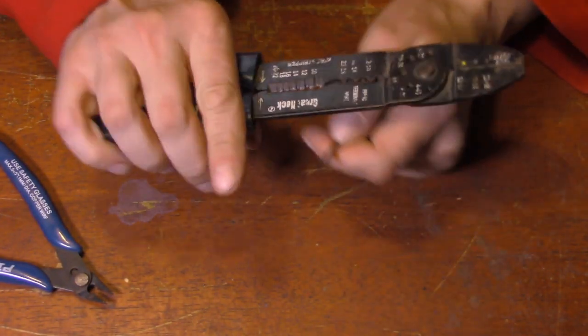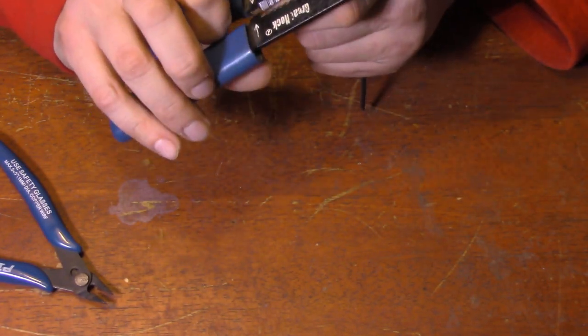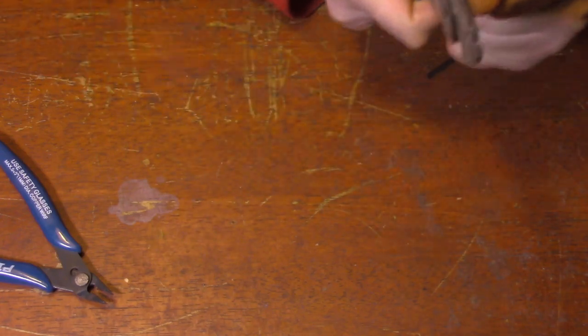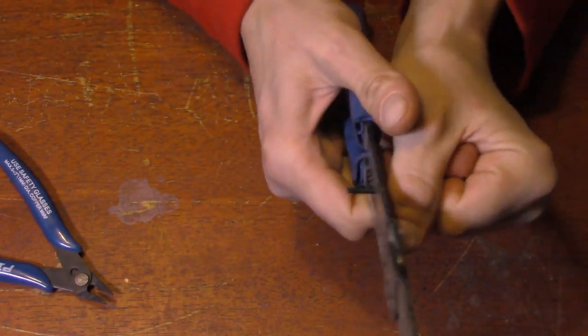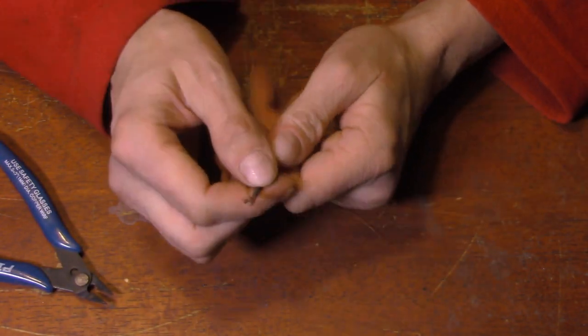Alright, I'm going to take my wire stripper and put it in the corresponding slot. And just to make things easier, I'm going to try to take off around three quarters of an inch to an inch. That's what we get right there.